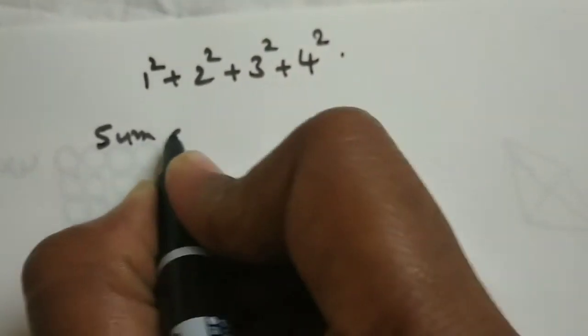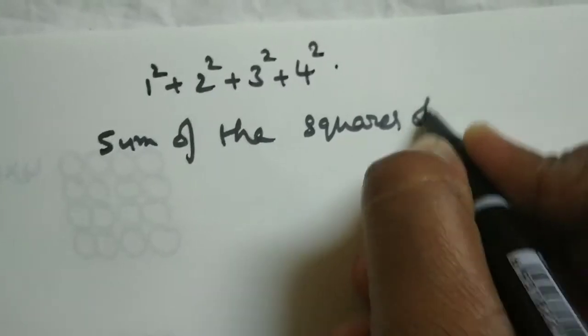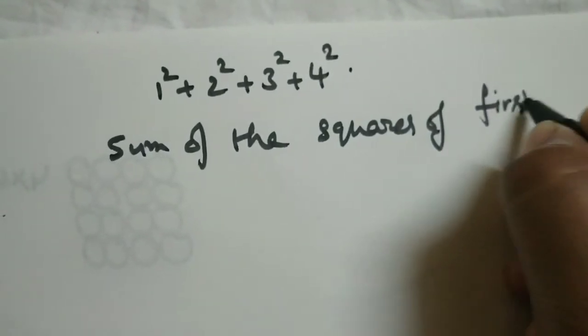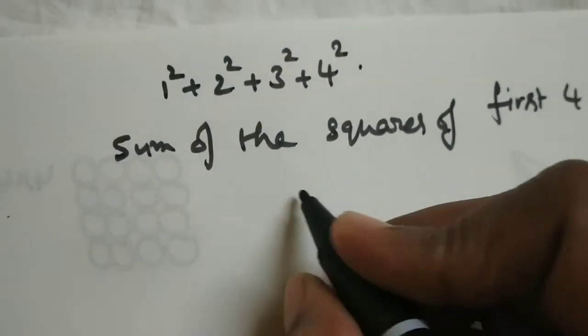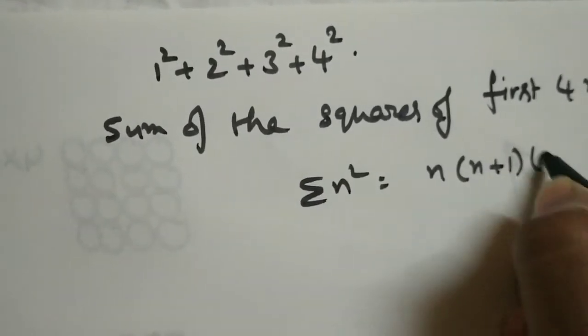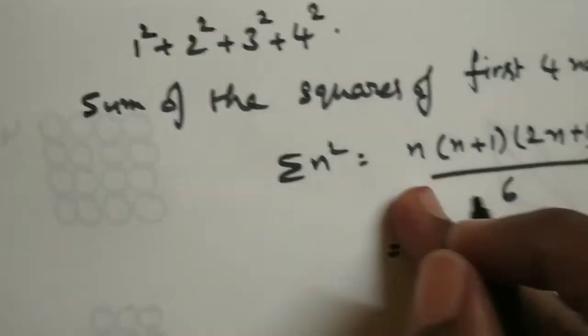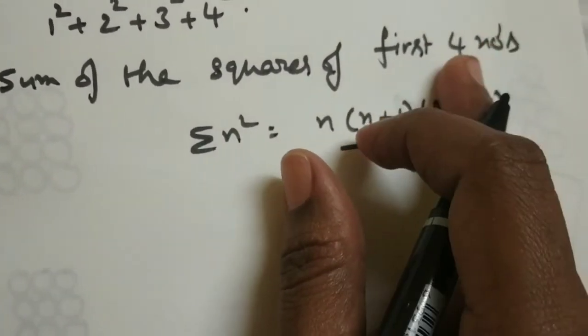Sum of the squares of first n numbers, formula is sigma n squared equals n into n plus 1 into 2n plus 1 divided by 6. Here n equals first 4 numbers, n equals 4.